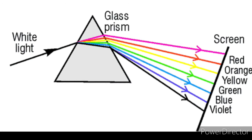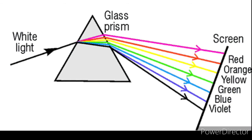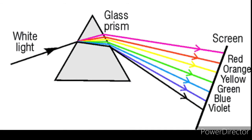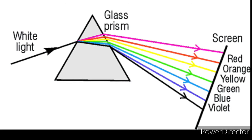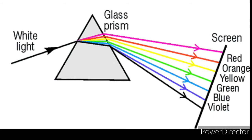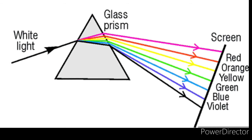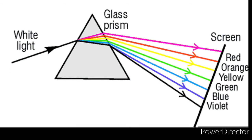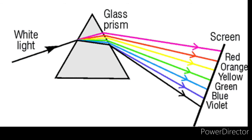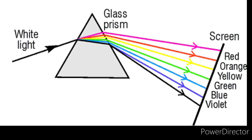Sunlight is white but it's a mixture of all colors. Now, have you heard about a prism? A prism is made up of transparent glass or plastic. When light enters the prism it refracts, and refracts again when it exits. As it does so, it splits into several different colors.